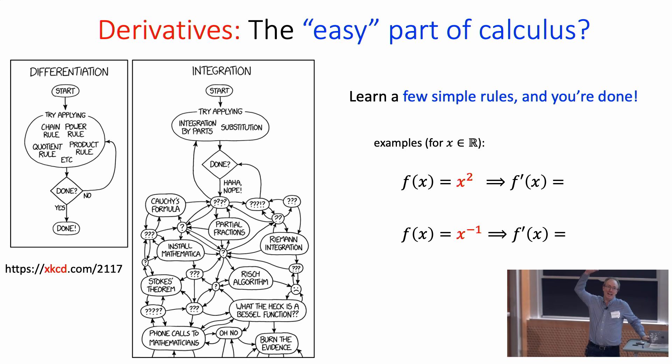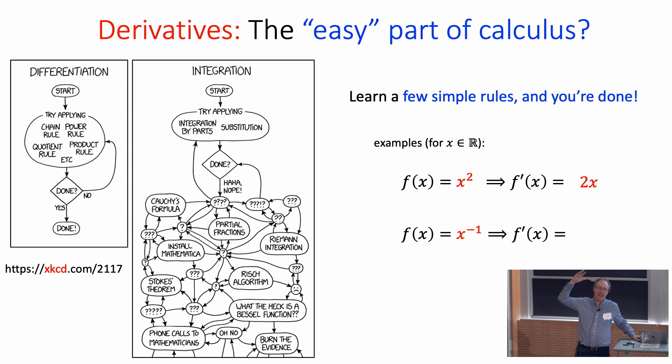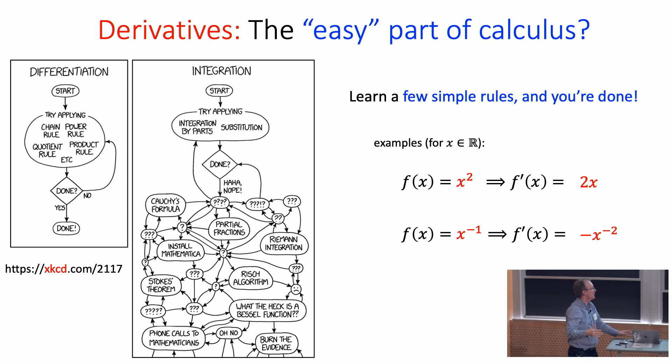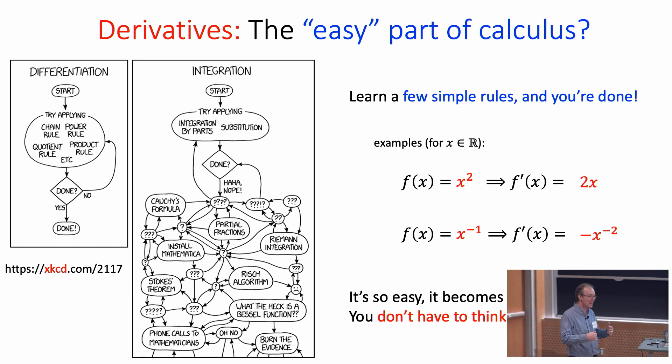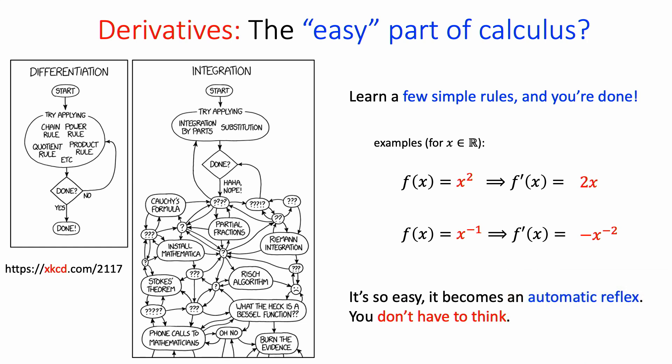For example, the derivative of x² is 2x; the derivative of 1/x is −1/x². It's like an automatic reflex that bypasses your brain — you don't even have to think about it. So it's a solved problem; we're done with derivatives, we don't have to think about it anymore.